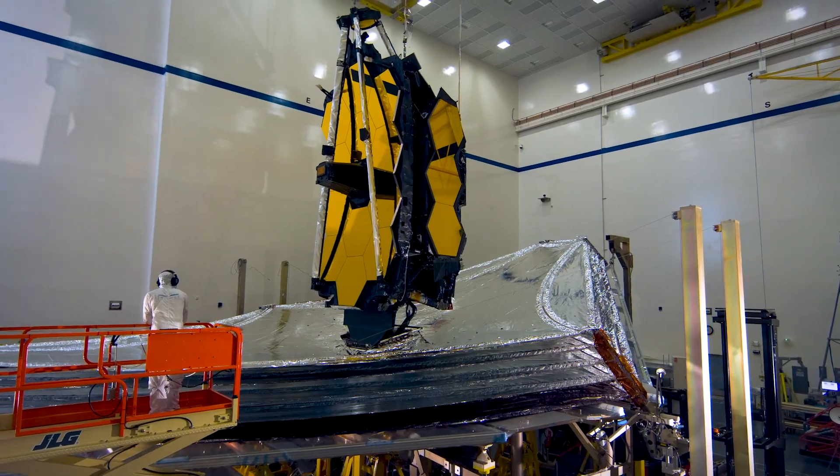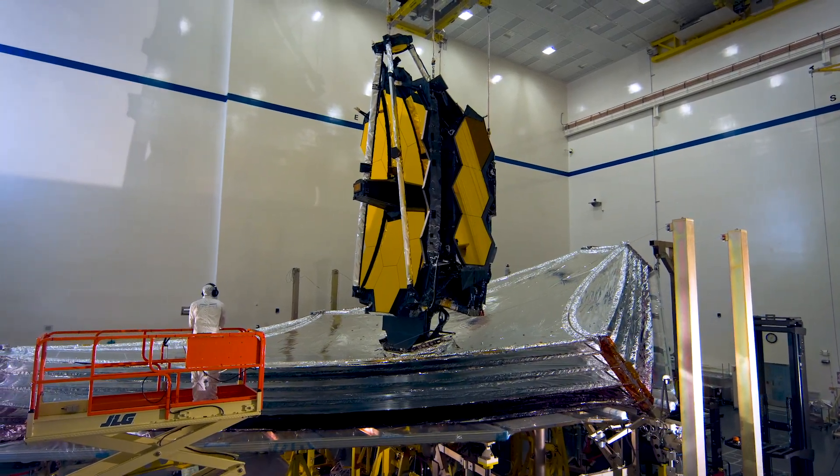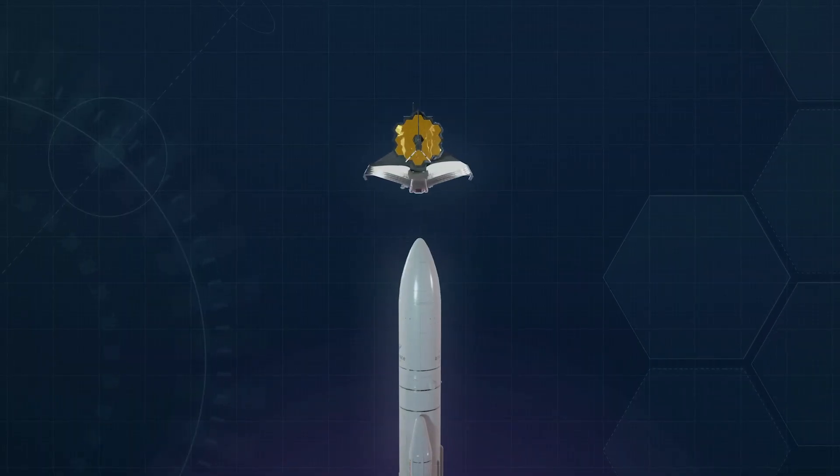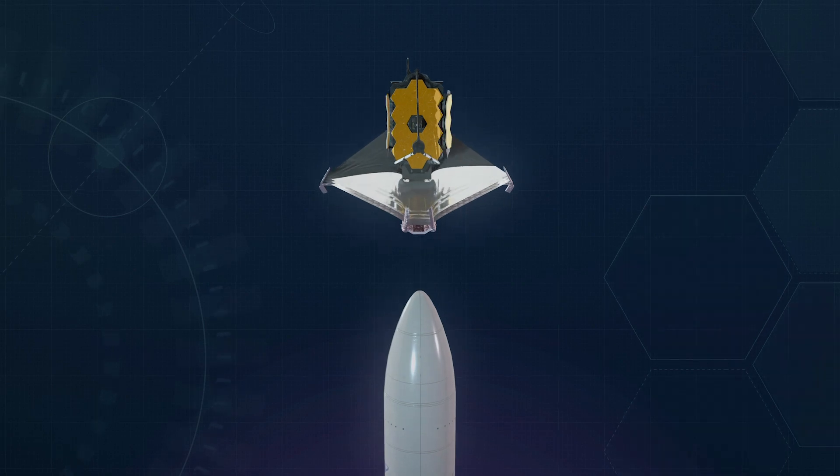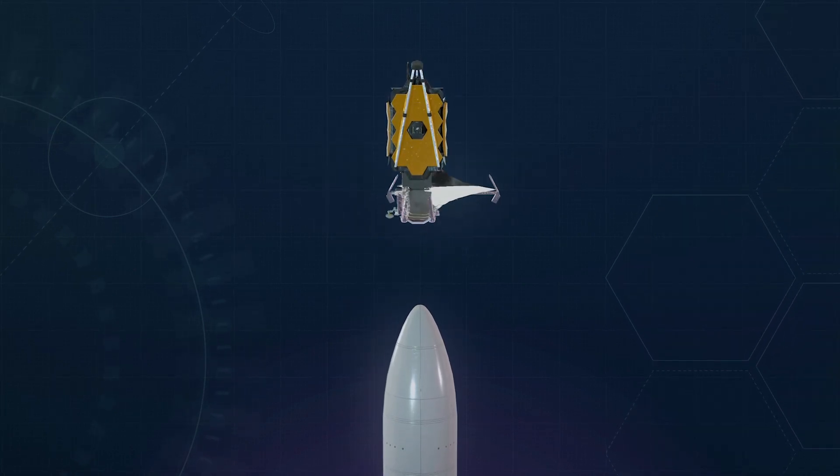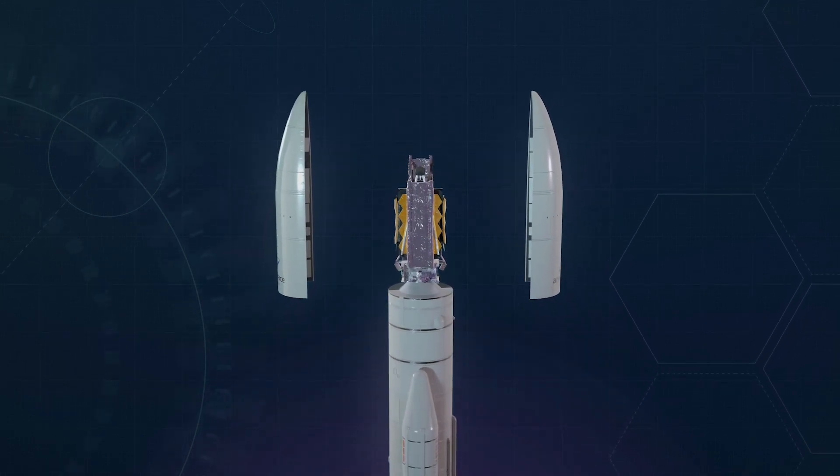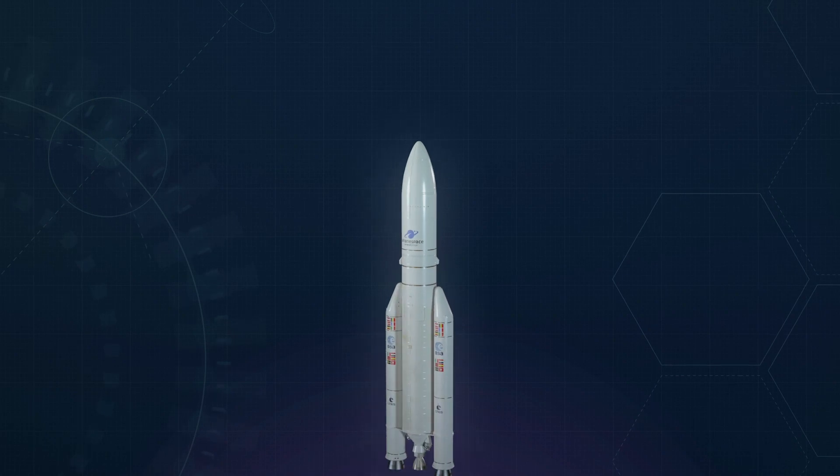Launching such a large telescope into space is an incredible engineering challenge. Fully deployed, Webb is too large to fit inside any rocket fairing. Engineers designed it to be folded, like origami, to squeeze inside the European Space Agency's five-meter diameter Arian V rocket fairing.